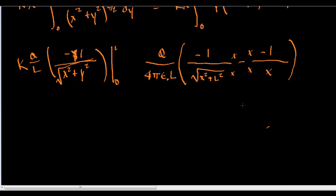And we get x over x squared, and we get x, negative x over x to the square root of x squared plus l squared. Minus and minus makes a plus, right?